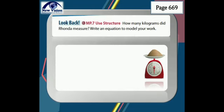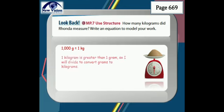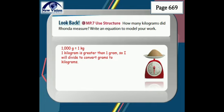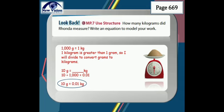Next question: how many kilograms did Ronda measure? Write an equation to model your work. Our conversion factor is 1,000 grams equals 1 kilogram. Since 1 kilogram is greater than 1 gram, we divide to convert grams to kilograms. 10 grams divided by 1,000 equals 0.01, so 10 grams is equal to 0.01 kg.